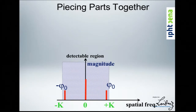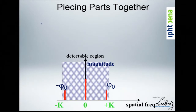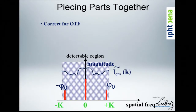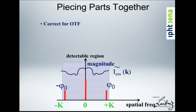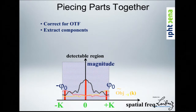Putting all the puzzle pieces together: we make three measurements, Fourier-transform each image, and get mixed curves. Step one: correct for the effect of the optical transfer function — essentially divide by the transfer function. Step two: extract the components using the inverse matrix applied to the three measurements — we get back the three individual components.